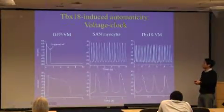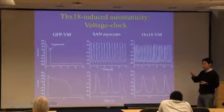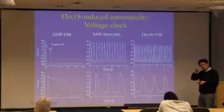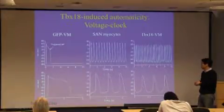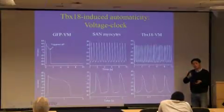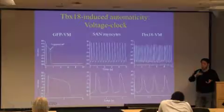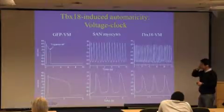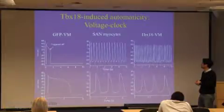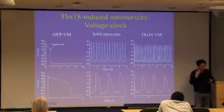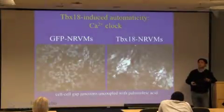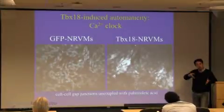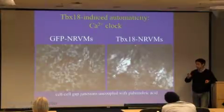In contrast, control ventricular myocytes delivered with GFP alone fired an action potential only when we injected a stimulatory depolarizing current — once fired, they stay quiet. Ventricular and atrial cardiomyocytes are boring cells: they do not fire unless stimulated. When we saw these electrophysiological properties of TBX18-transduced ventricular myocytes, we were really, really excited. What also excited us was that the efficiency of creating these spontaneously beating cardiomyocytes with a single transcription factor was really high.